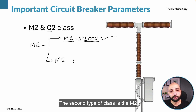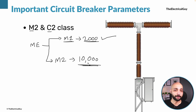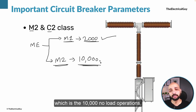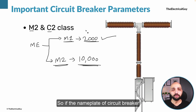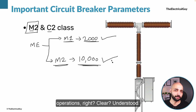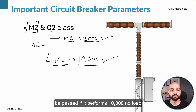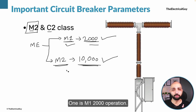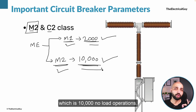The second type is the M2 class, which means the circuit breaker needs to perform 10,000 no-load operations. This is called the extended mechanical endurance class. The circuit breaker needs to perform those operations without needing any major maintenance. So if the nameplate indicates M2, the breaker has performed 10,000 no-load operations. M2 is more stringent than M1 class.